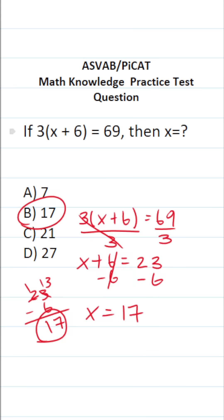So the answer is B. Now that we know x equals 17, let's quickly check our work. Let's plug in 17 for x. This becomes 3 times 17 plus 6 equals 69. If this makes a true mathematical statement, that means we did our work correctly.